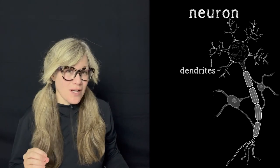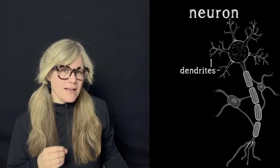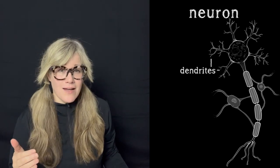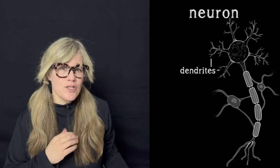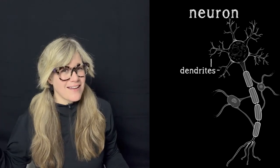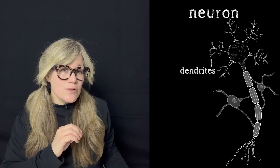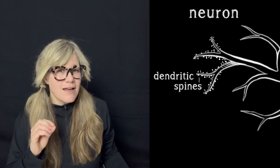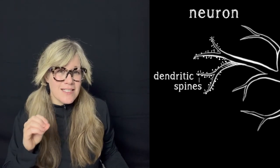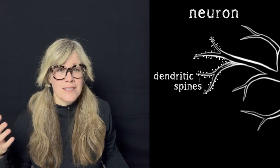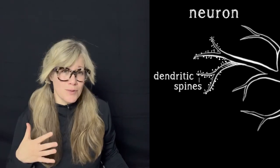Now the tree-like appendages branching off of the soma are called dendrites. The word dendrite comes from the Greek word dendron, which means tree. Not all neurons have dendrites, but those that do have junctions at the ends that receive signals from other neurons. The dendritic branches also have many tiny thorn-like structures attached to them called spines.